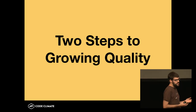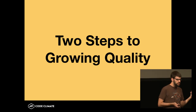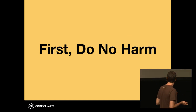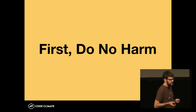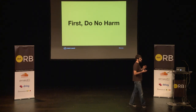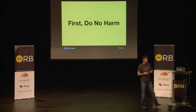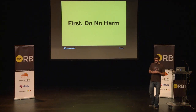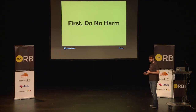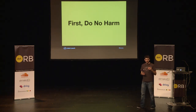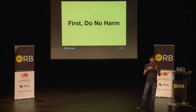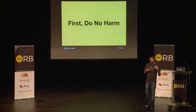When you're ready to start taking steps to improve your quality, there are two primary things you need to do. First, you need to stop — do no harm. Don't introduce any new problematic code. This is the most important thing, because a lot of teams know they have a quality problem but continue to introduce new quality issues as they go. That just makes the problem worse. When you find yourself in a hole, stop digging.